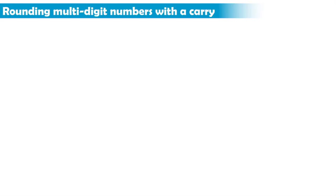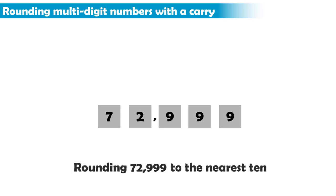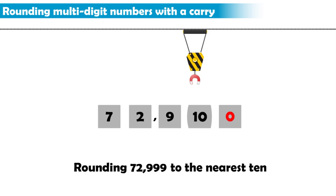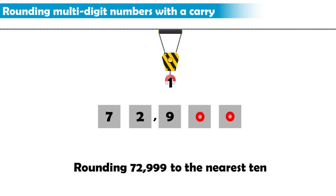For example, suppose we have the number 72,999, which we want to round to the nearest 10. The number made by the ones and tens digits is 99, and now we know we have to round up to 100. So we add 1 to the digit on the left of the tens digit, and reset the tens digit and the digit to its right to 0.